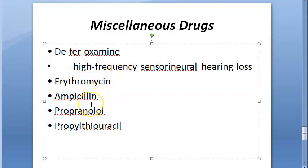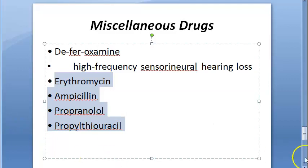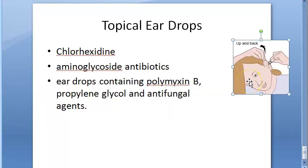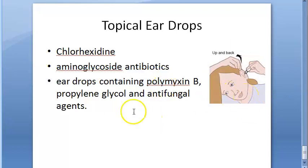Isolated cases of deafness have been reported with erythromycin, ampicillin, chloramphenicol, indomethacin, phenylbutazone, ibuprofen, propranolol, and propylthiouracil. Topical ear drops can also cause damage to the cochlea through absorption via the oval and round windows. Drugs containing polymyxin B, propylene glycol, and antifungal agents all have ototoxic potential, which is why only approved drops should be used for middle ear infections.